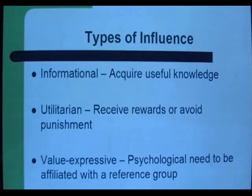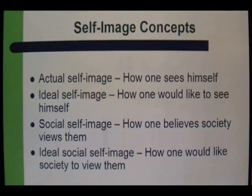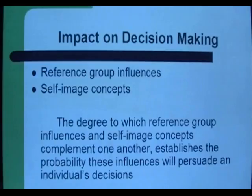When attempting to understand the full implications of influences an individual receives from their reference groups, it is vital to recognize how well those influences complement an individual's self-image concepts. There are four types of self-image concepts. Actual self-image is how one sees himself. An ideal self-image is how one desires to see themselves. A social self-image is how one believes society views them. And an ideal social self-image is how one would like society to view them. The degree to which reference group influences and self-image concepts complement one another establishes the probability these influences will persuade an individual's decisions.